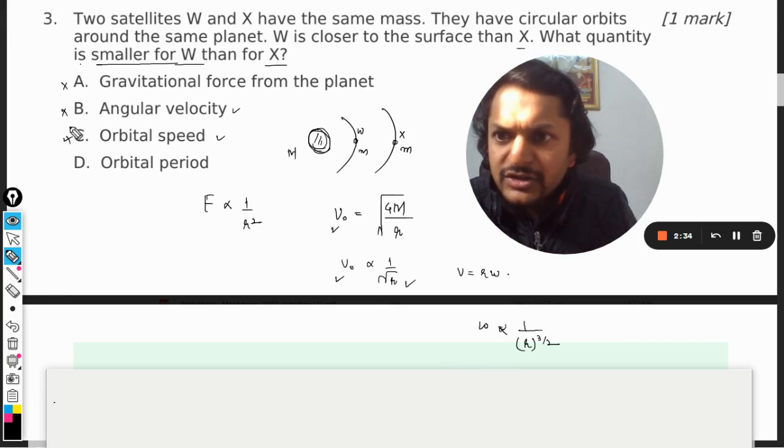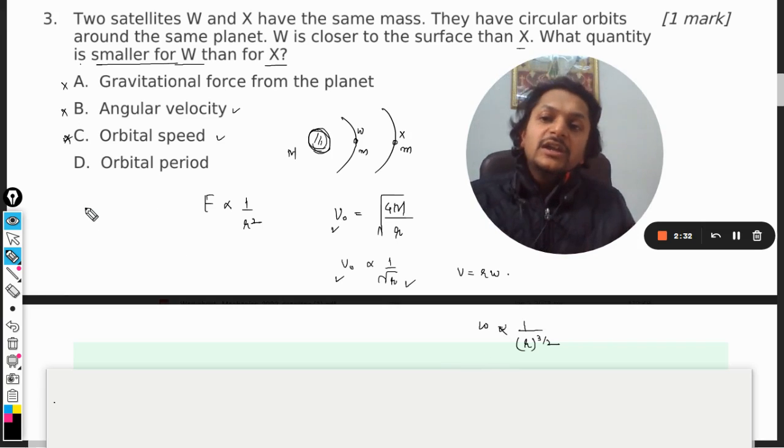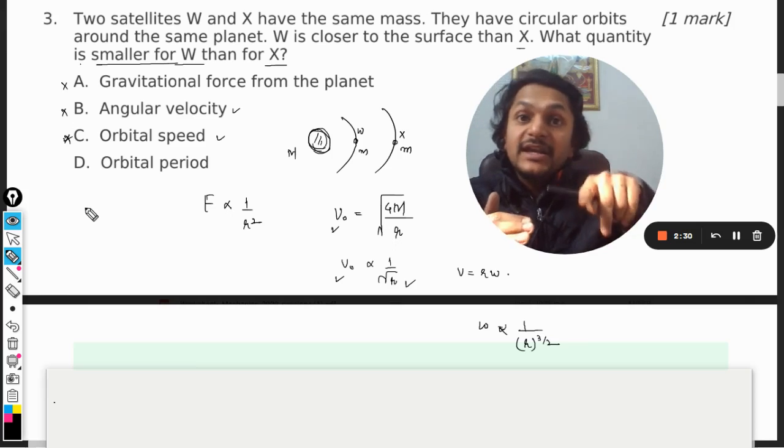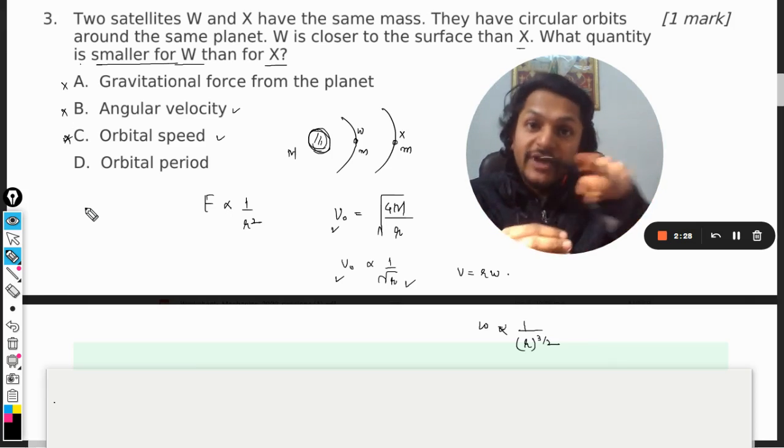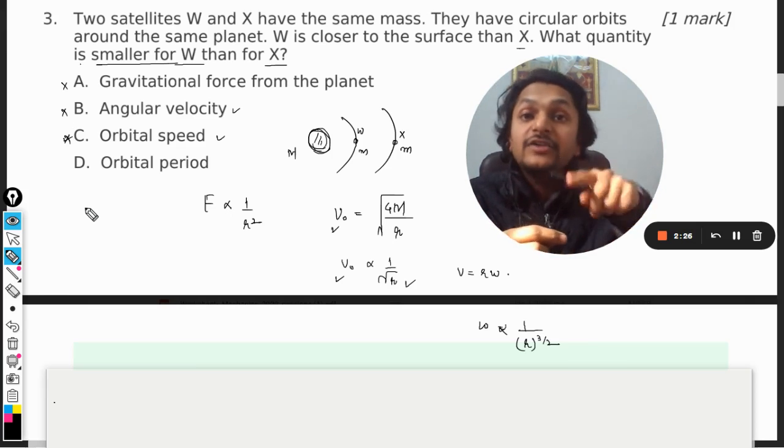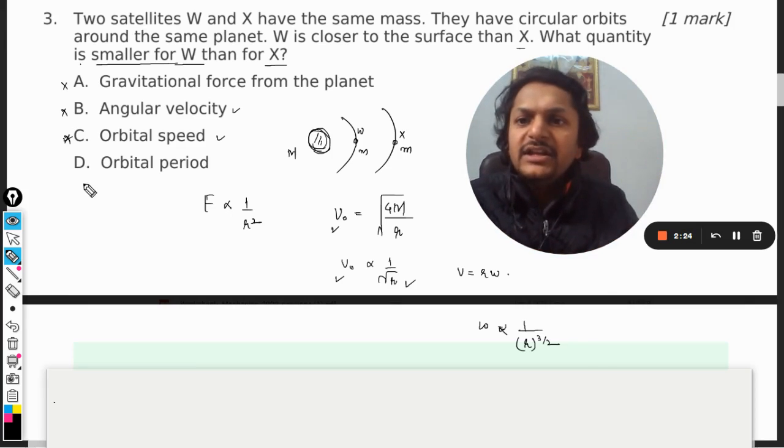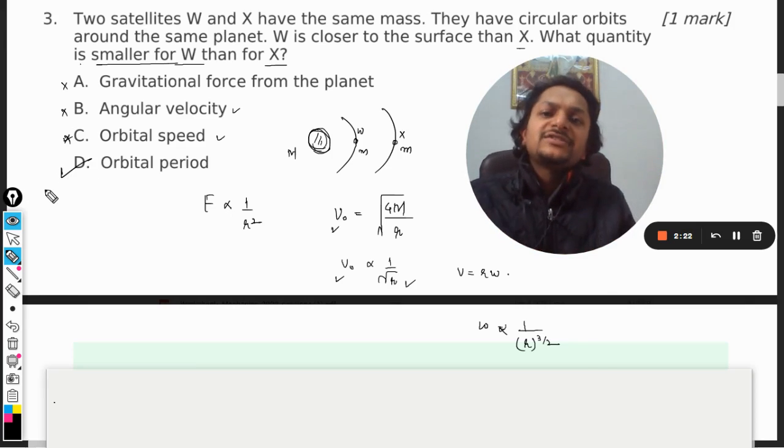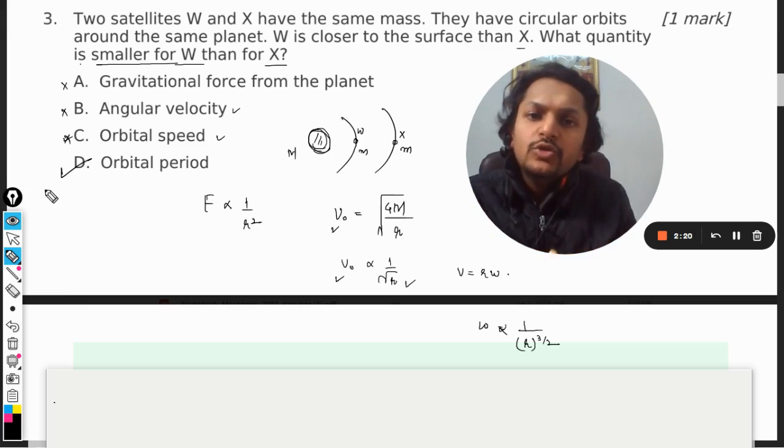Now if the velocities are increasing and they are rotating or revolving around the planet at a higher velocity, definitely the orbital time period will be lesser. It will be lesser for W and more for X.